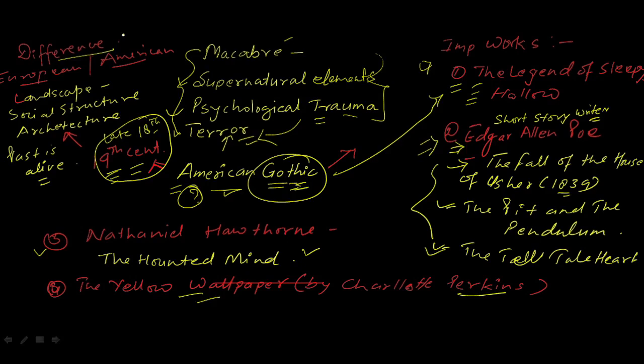So here are the important works. Now let's come to the question: what is the difference between European and American Gothic literature? First is the landscape—the landscape is different. Second is social structure. When we say American Gothic literature, common themes include social structure is different, like rational cannot overcome irrational, and past is alive.